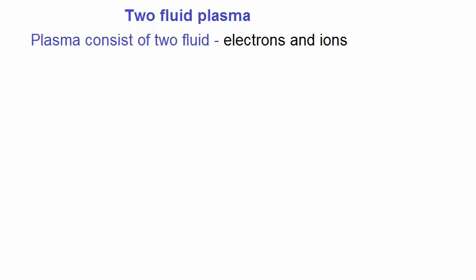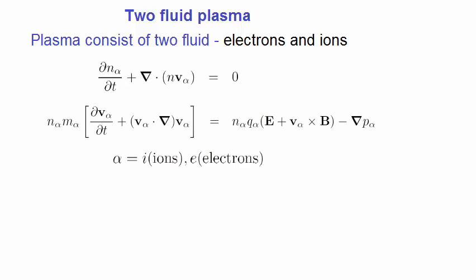We can think of a plasma as consisting of two interpenetrating fluids, an electron and an ion fluid. So rather than there being two fluid equations, there are actually four. Here, we've placed the subscript alpha to indicate whether the two equations are for ions or for electrons.